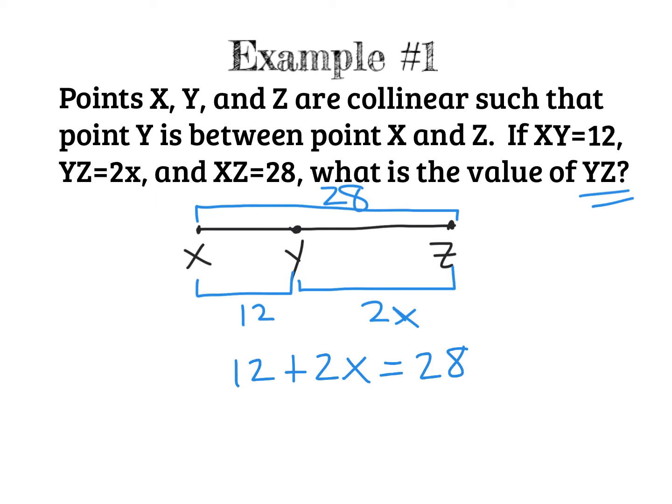And at this point, you're just solving for X. It becomes an algebra one problem. We're going to isolate the variables. We're going to move the 12 to the other side. Since it's positive 12, we do the inverse. Subtract 12. We have 2X equals 16. To get rid of the 2, since we're multiplying 2 times X, the inverse of multiplying by 2 is to divide by 2. And you get X equals 8.